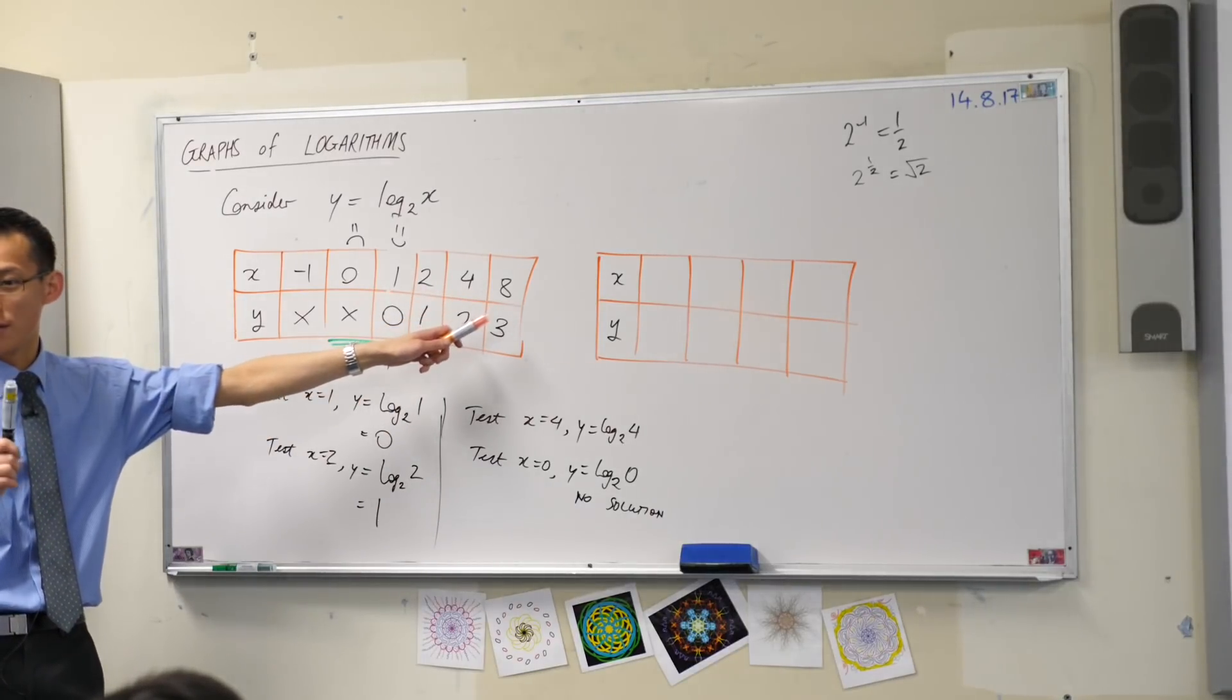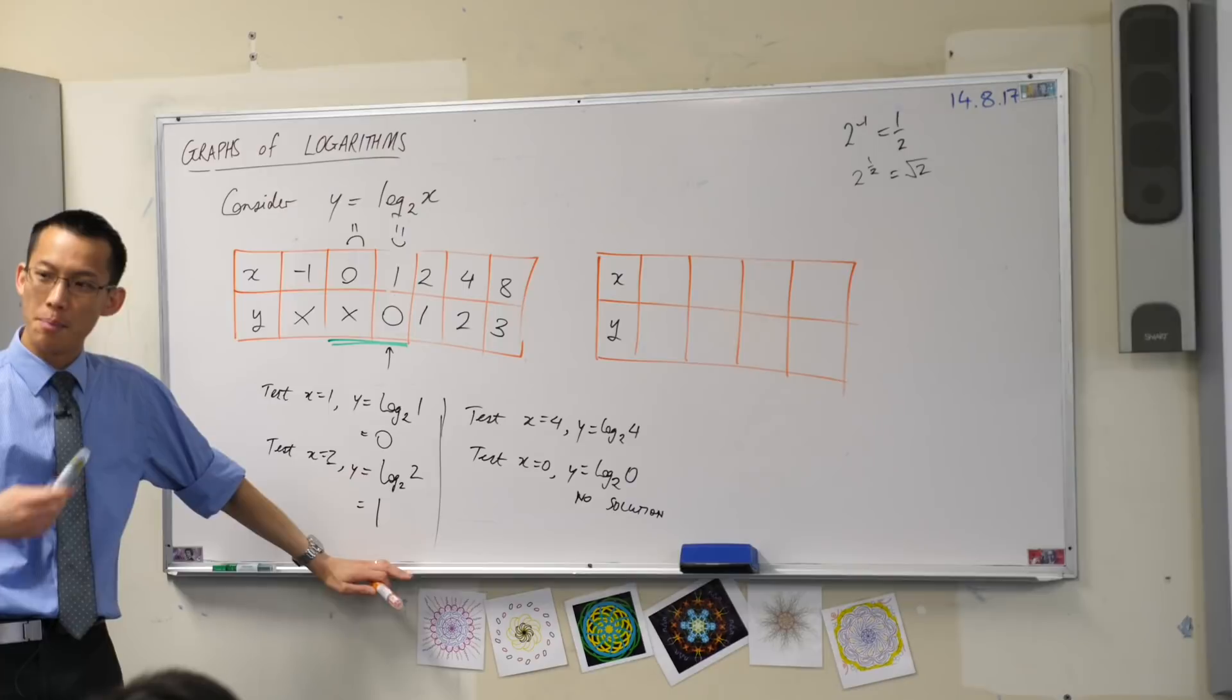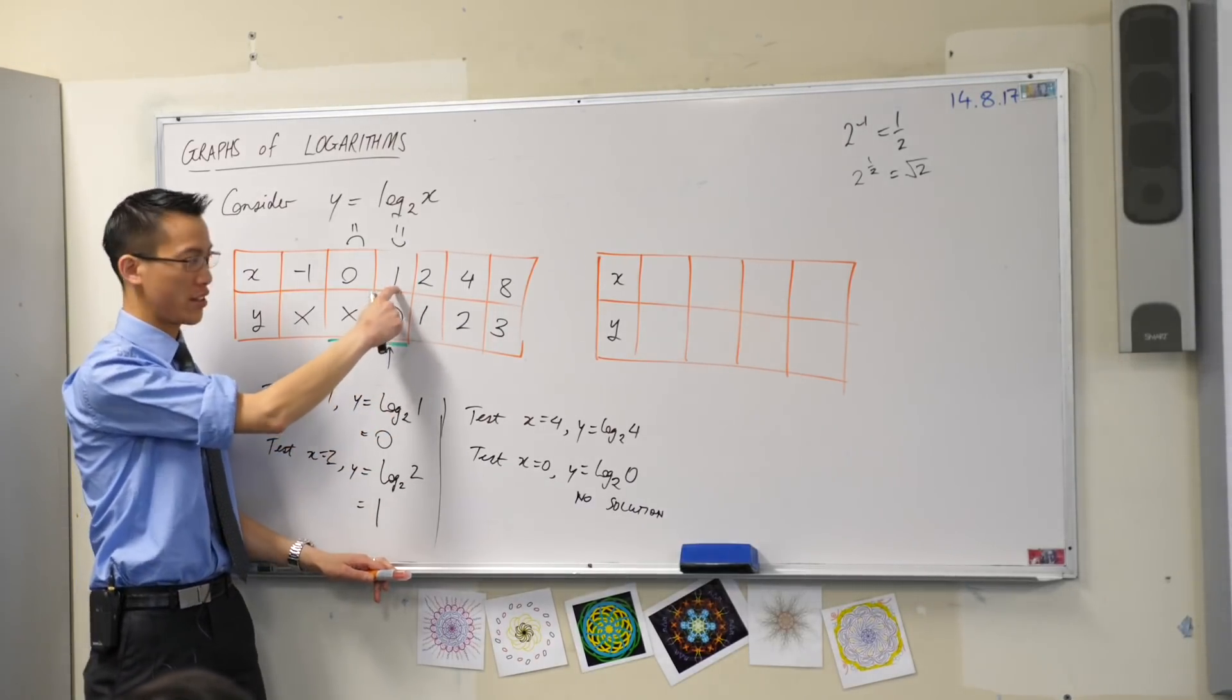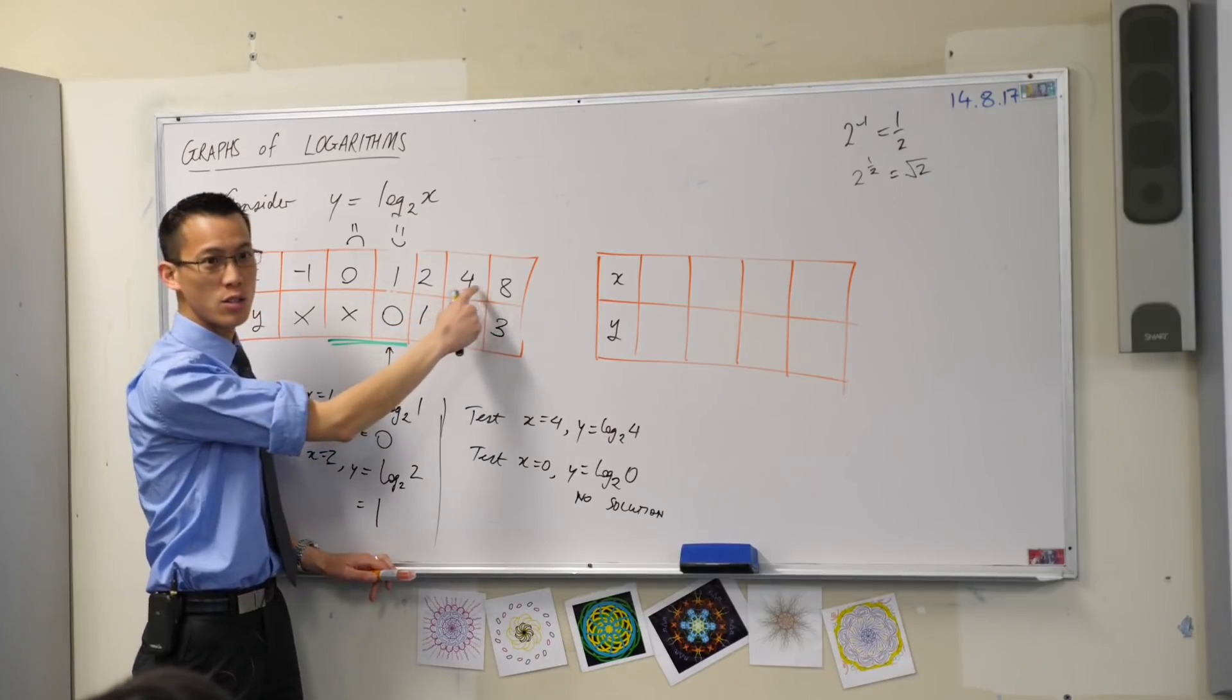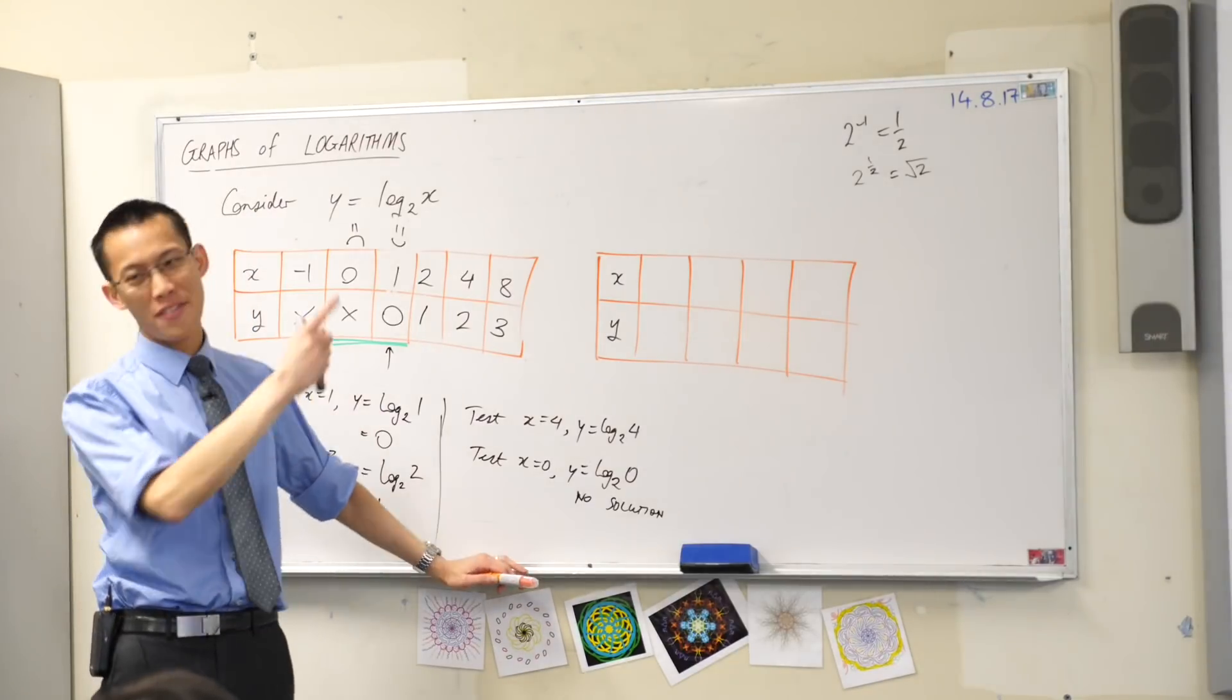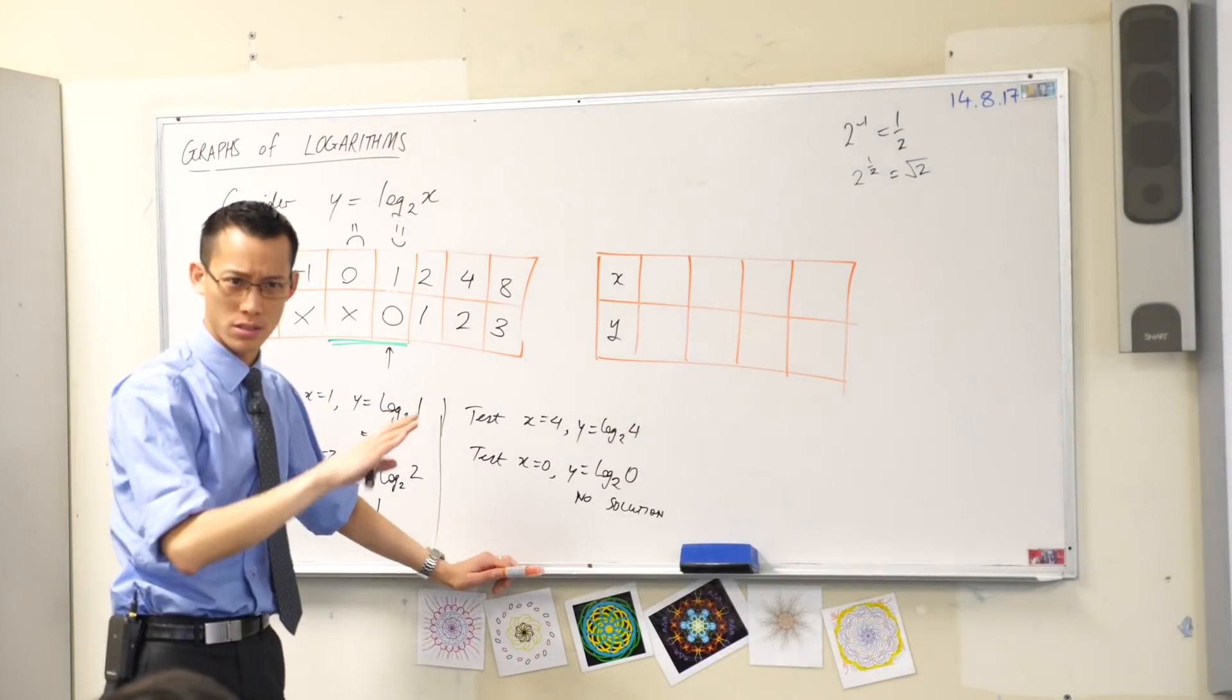I chose each of these guys because they are each a power of 2. This is 2 to the power of 0, 2 to the power of 1, 2 squared, 2 cubed. The next one would have been 2 to the power of 4, which is 16. Then 2 to the power of 5, which is 32, and so on.